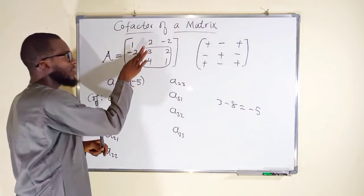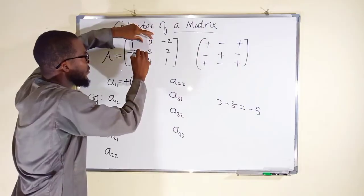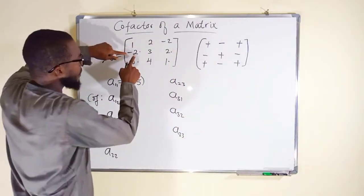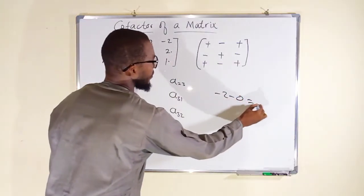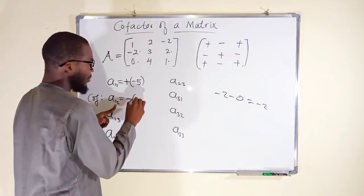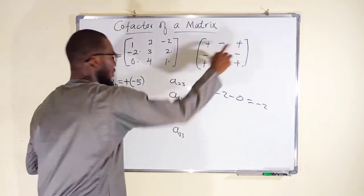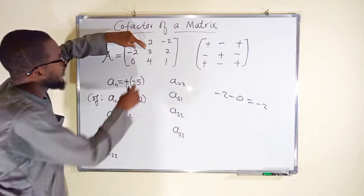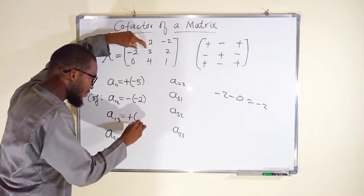For A12, the position is negative and the minor is negative 2, so negative times negative 2 gives positive 2. For A13 (positive sign), closing its row and column leaves 4 elements: 2, 3, negative 2, 2. Wait — the determinant is negative 8 minus 0, which is negative 8. So A13 equals positive times negative 8, giving negative 8.